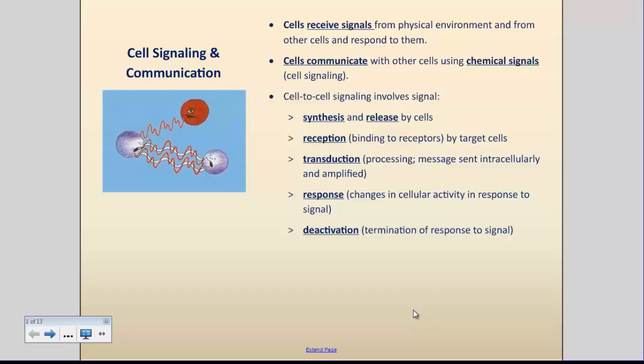So when these cells interact through chemical communication, what happens is that a chemical signal is produced by a certain type of cell and is released. That chemical signal would bind to a receptor on the target cell, so that's the reception part of the chemical signal, and that binding between the chemical signal and the receptor would cause processing of the signal, a phenomenon known as transduction.